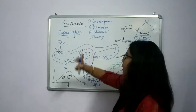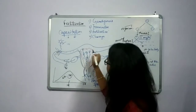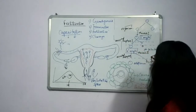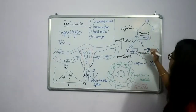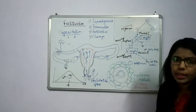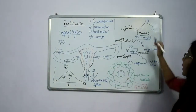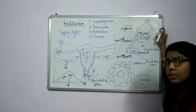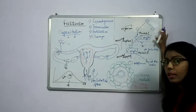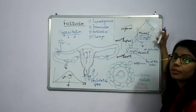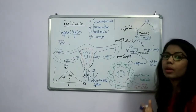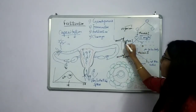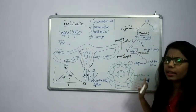Capacitation is very important from an examination point of view. Now, in oogenesis — which we covered earlier — there is formation and production of an ovum. Oogenesis starts from when the female fetus is present in the mother's womb, but it is arrested at the prophase stage of meiosis I, as discussed in our earlier lecture.